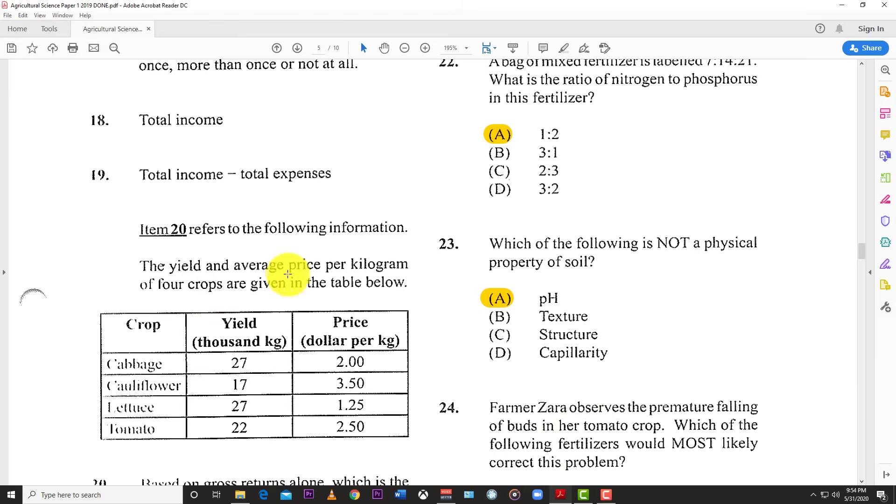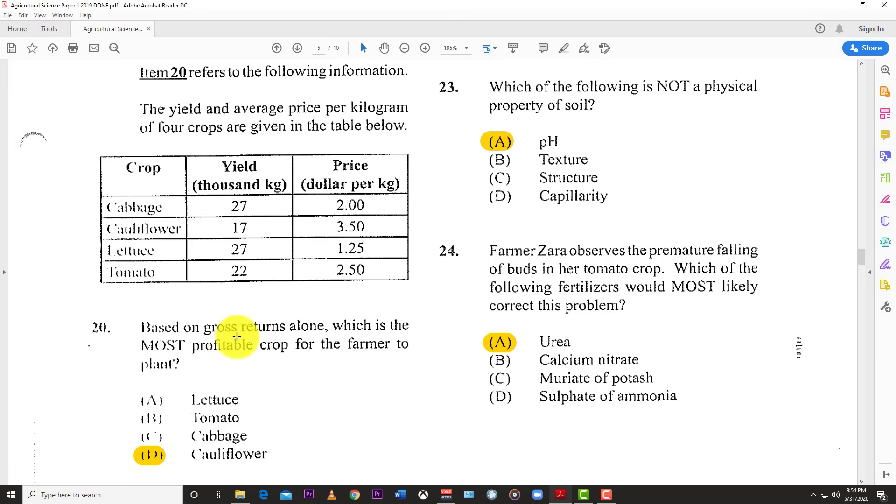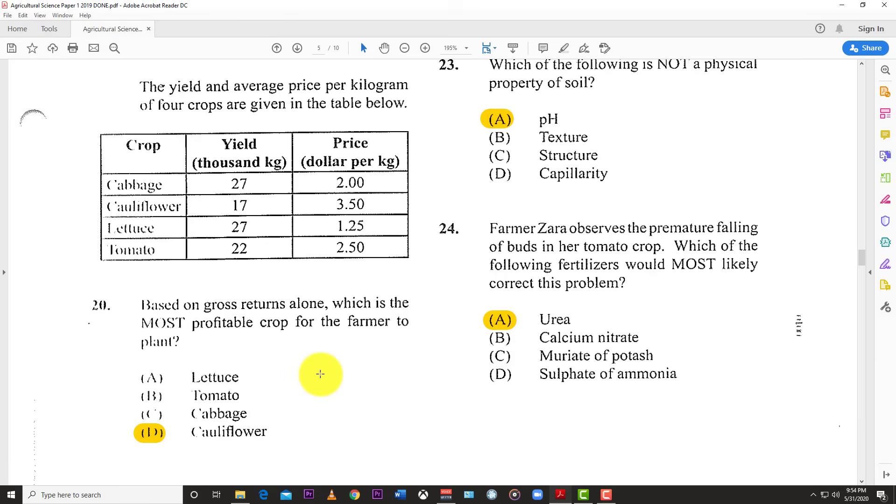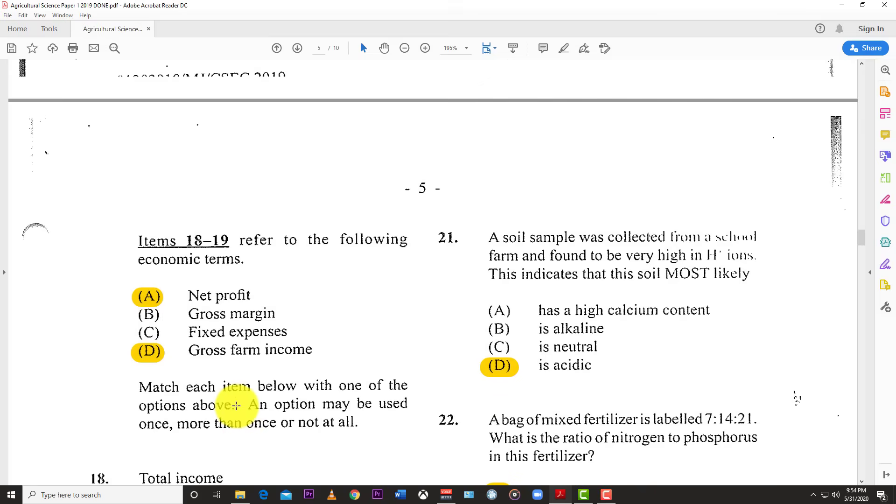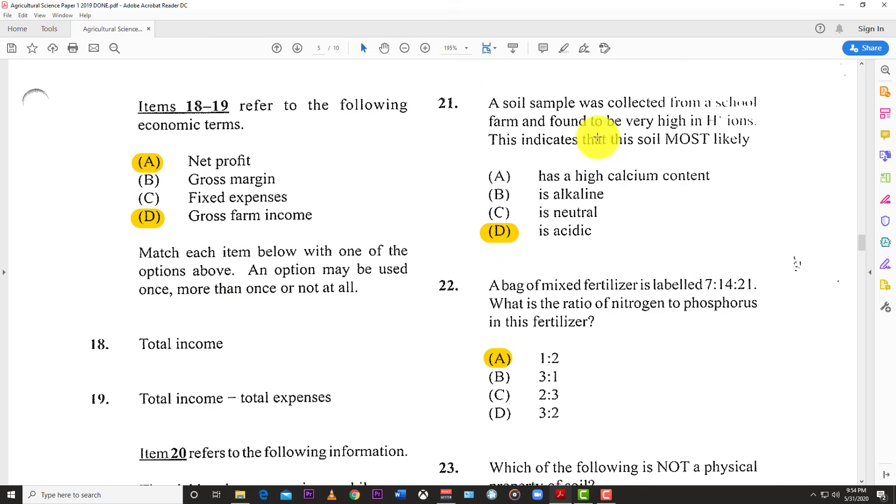Number 20 refers to a table showing yields and average prices per kilogram of four crops. Based on gross returns alone, which is the most profitable crop? The answer is cauliflower (D), because 17 times $3.50 gives the highest return. We don't know about expenses, but based on just price times quantity, it's cauliflower.